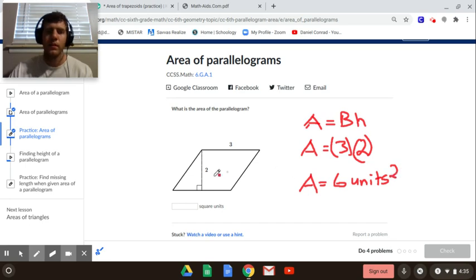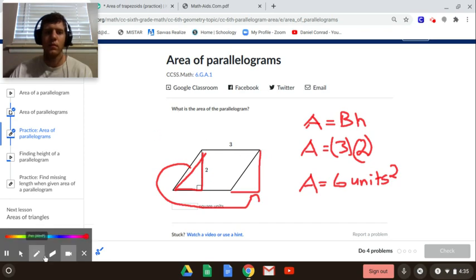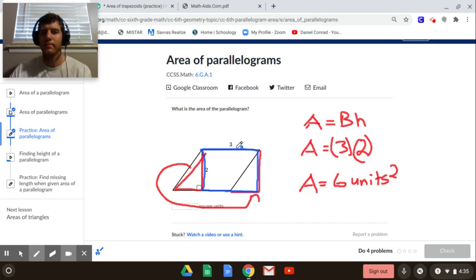Right, you can imagine this as you could take this triangle off and relocate it over here. If we were to relocate it we would have a rectangle with dimensions 2 by 3. So it's essentially just like a rectangle, length times width or base times height.